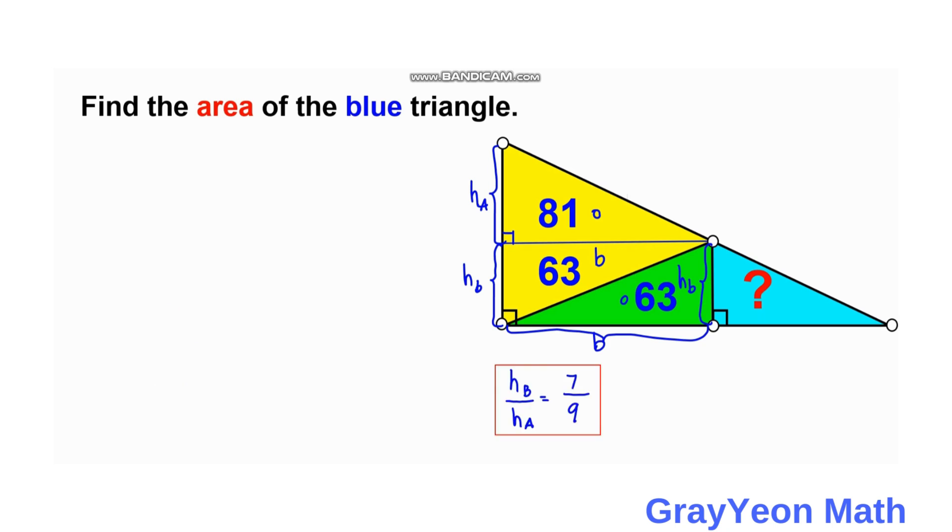Next, we compare this blue triangle with this yellow right triangle with an area of 81 square units. Area of the blue over the area of the yellow using area scale factor. The height for the blue is h_B and the corresponding for the yellow is h_A. Area of the blue over the area of the yellow which is 81 is equal to h_B over h_A which is 7 over 9, and we need to square that.